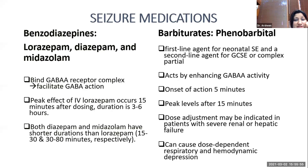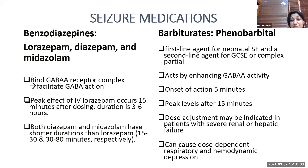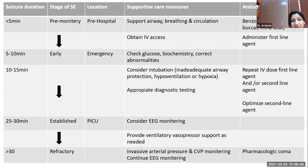Benzodiazepines include lorazepam, diazepam, and midazolam, which bind the GABA receptor complex and facilitate GABA action. The peak effect of IV lorazepam occurs 15 minutes after dosing, with duration of three to six hours. Both diazepam and midazolam have shorter durations than lorazepam — 15 minutes and 30 to 80 minutes respectively. Phenobarbital is the most commonly used barbiturate, first-line for neonatal status and second-line otherwise. It also enhances GABA activity, with onset of five minutes and peak level achieved in 15 minutes. Dose adjustment may be required in renal or hepatic insufficiency.